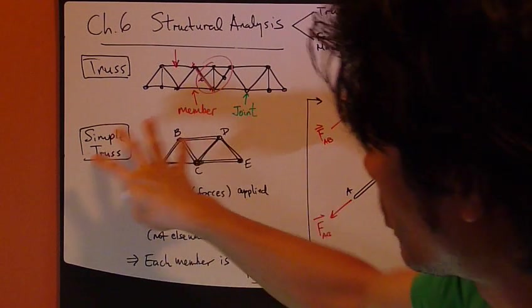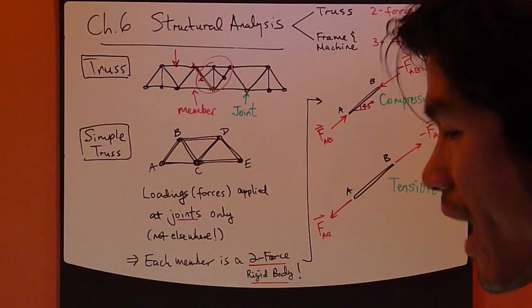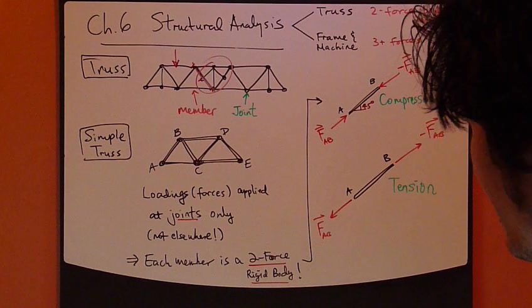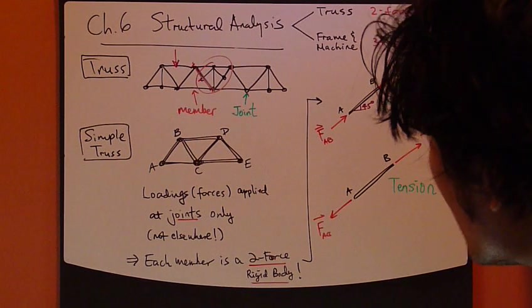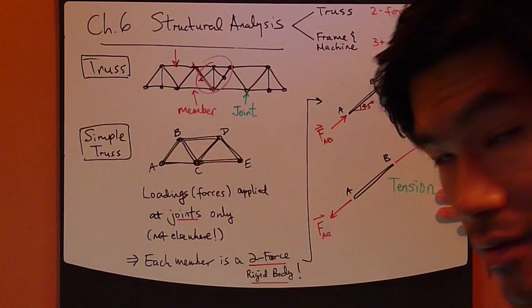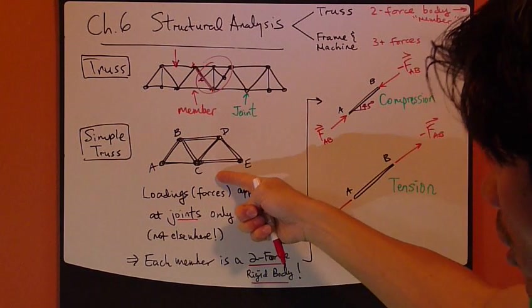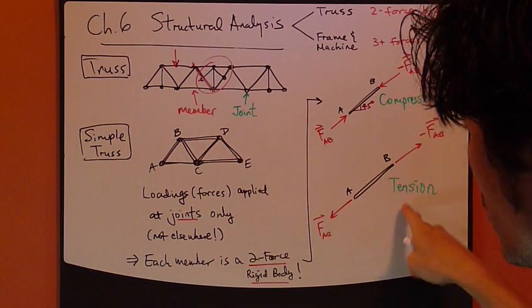So in a simple truss, the only two possible loading situations - it can be either under compression or tension. Each member can only be under compression or tension.